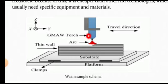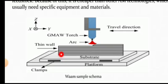Here you can see a GMAW torch. It will have the electrode in the form of wire, which is continuously being supplied, and there will be generation of arc. Initially, there will be a generation of arc between the substrate and the electrode wire, and then due to the generation of arc, the wire gets melted and deposited. You can deposit it layer by layer, and depending on the welding parameters like current, voltage, wire feed speed, and travel speed, you can get the width of this wall.